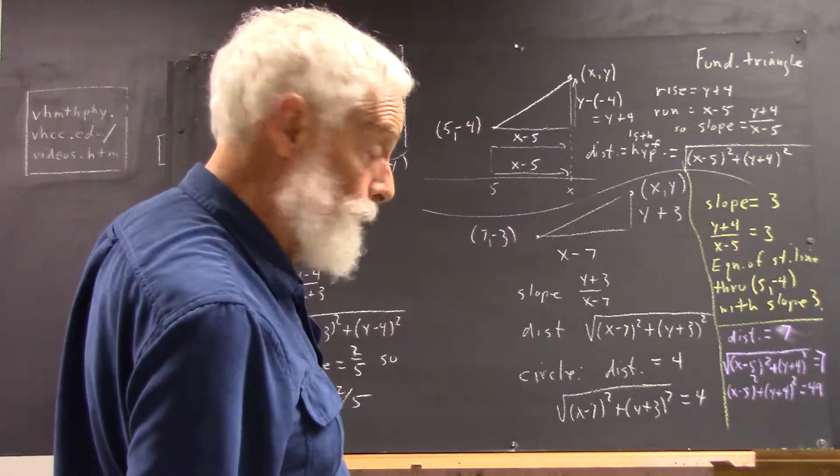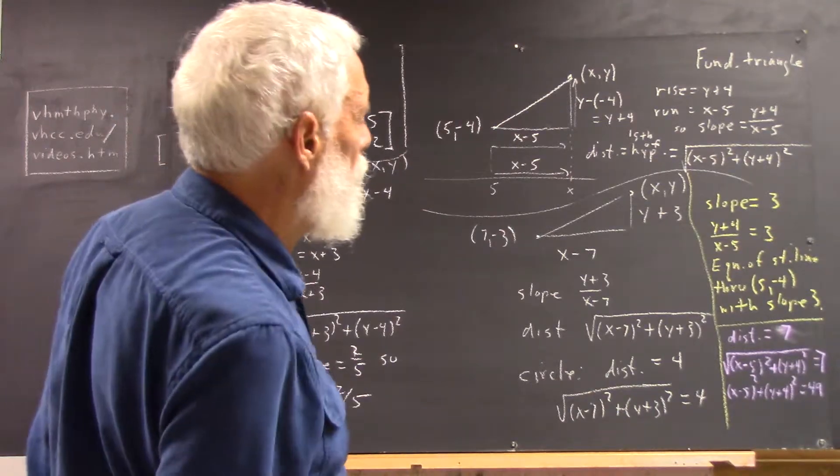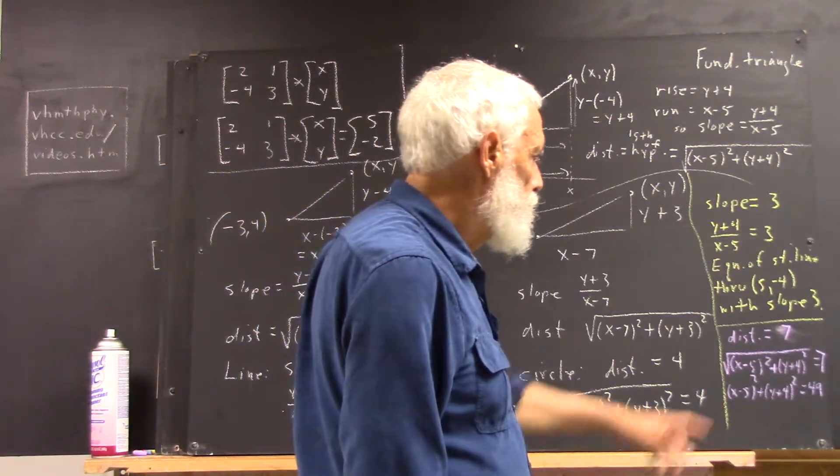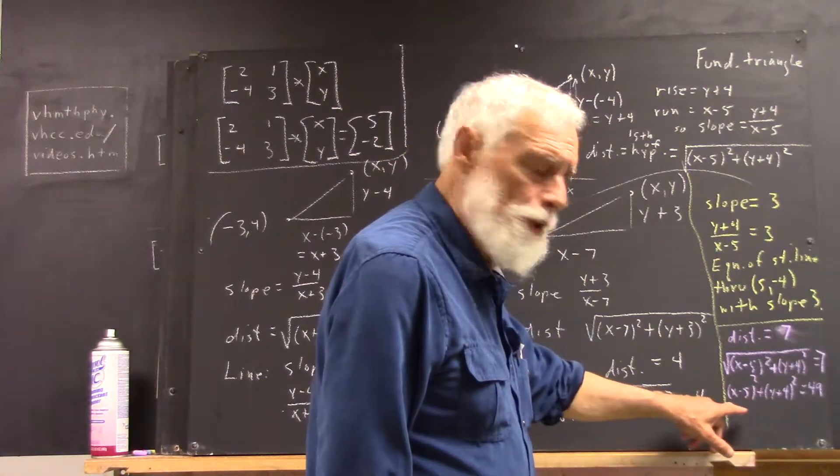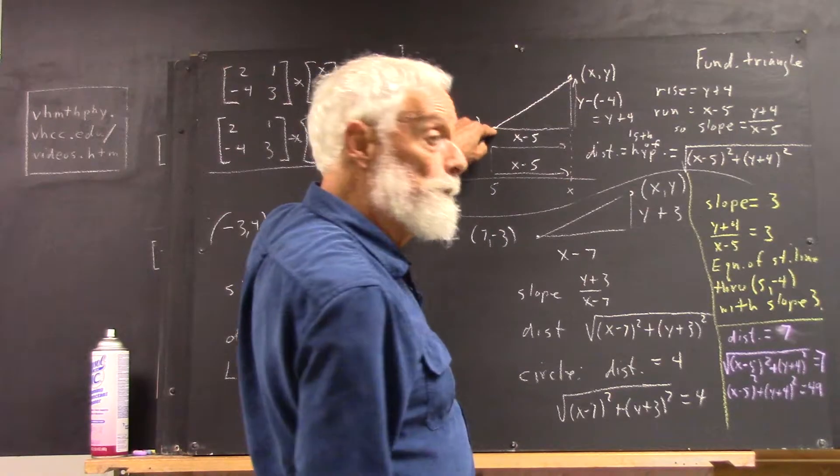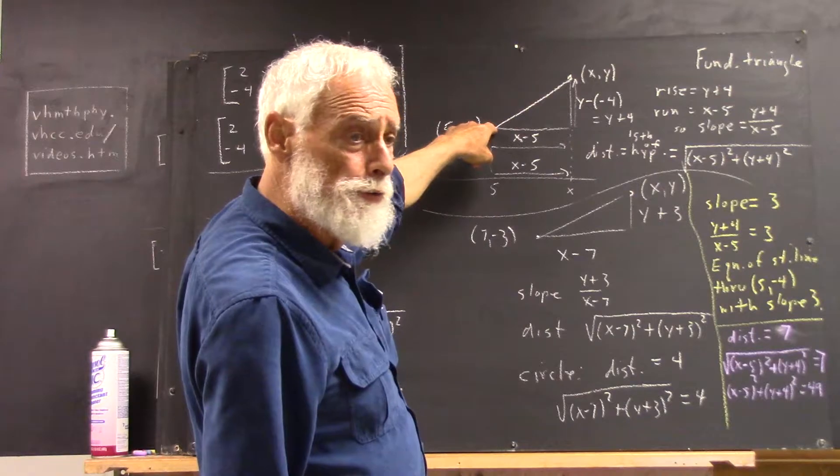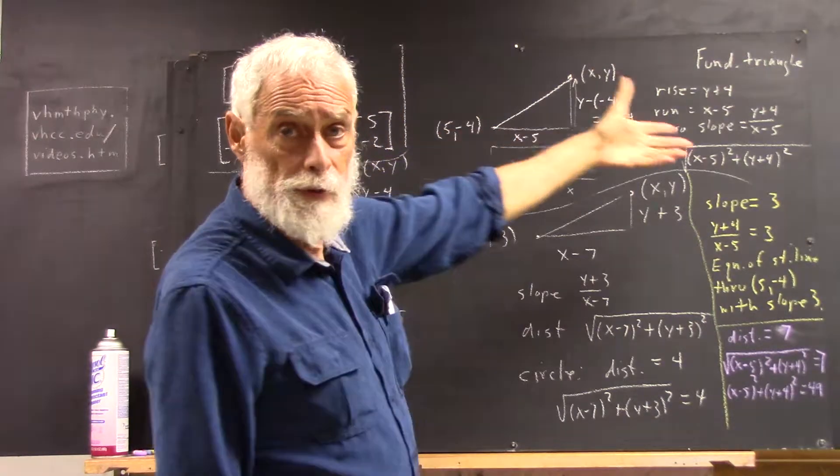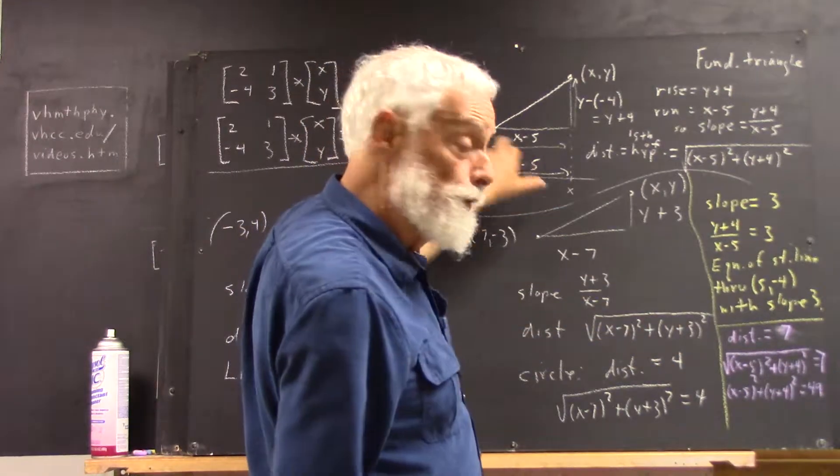And this turns out to be, well, this describes the condition for the point x, y to be 7 units from this point. What's the set of all points that are 7 units from this point? Well, that's the definition of a circle. It's a circle of radius 7 centered at this point.